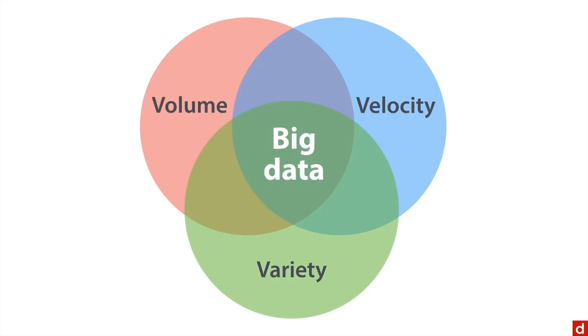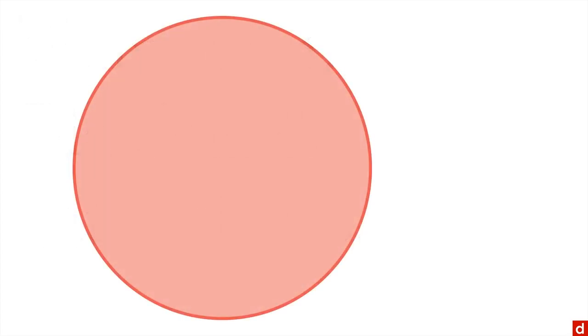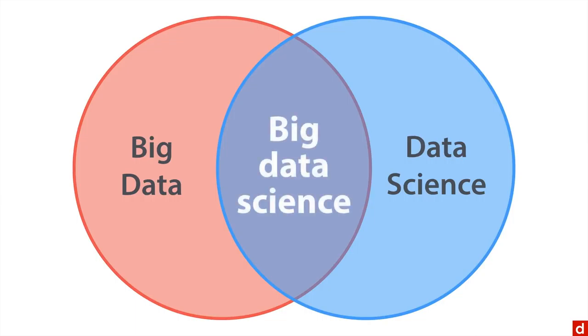Now, we can also combine these two if we want in a third Venn diagram. We call it big data and data science. This time is just two circles, with big data on the left and data science on the right. And the intersection there in the middle is big data science, which actually is a real term.